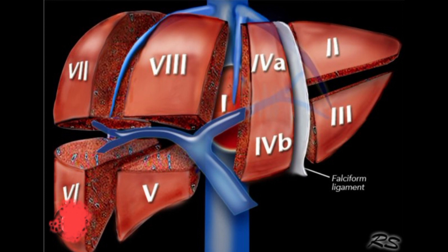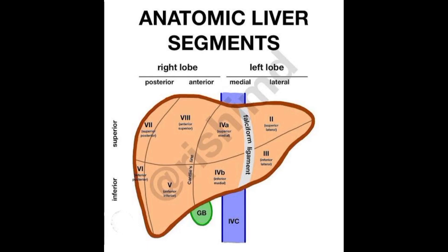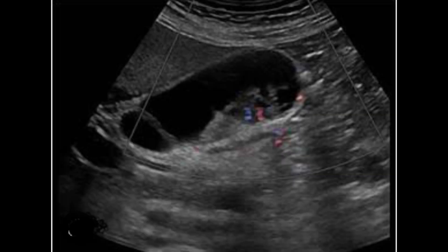This picture shows you the anatomy of the gallbladder and the segments of the liver that are attached with the gallbladder. The gallbladder is located under the right lobe of the liver, in segments 4b and 5. This picture shows you the Couinaud classification of the liver, and every segment has its own drainage in the form of bile duct branch, portal vein, and hepatic artery.